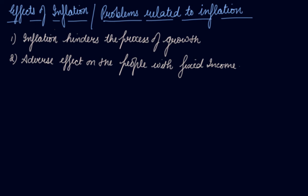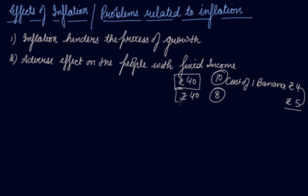Second, adverse effect on people with fixed income. When there is inflation in the economy, your income is fixed. This will reduce your purchasing power and reduces your real income. Let's suppose you have 40 rupees with you as income. If the cost of one banana increases to 5 rupees, you can only buy 8 bananas in 40 rupees instead of 10 bananas, just because there is a rise in prices of the commodity but no rise in the income of the consumer. This has an adverse effect on people with fixed income.